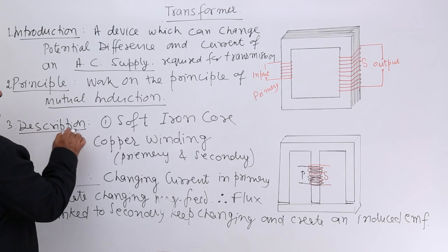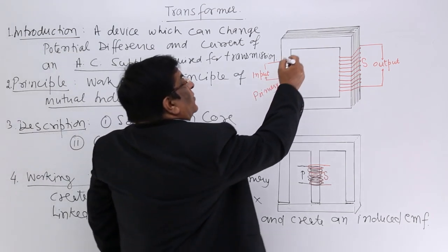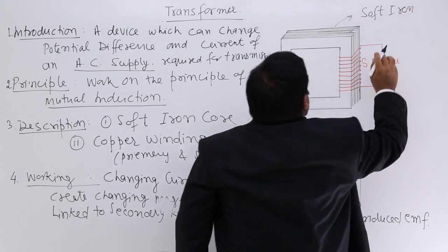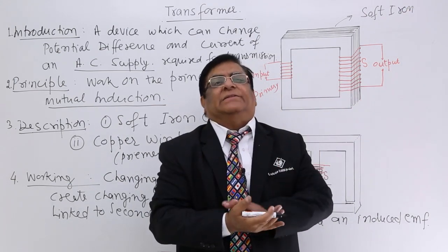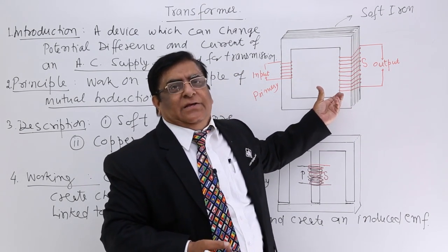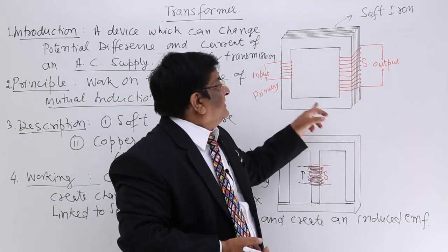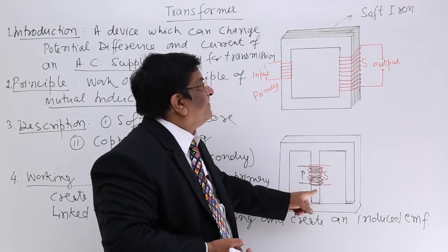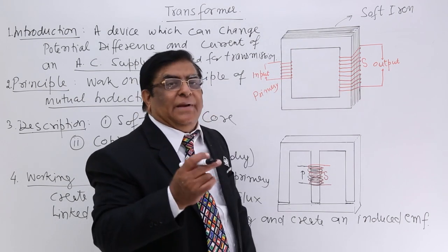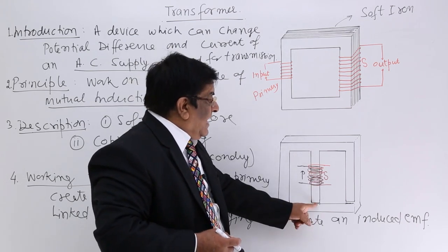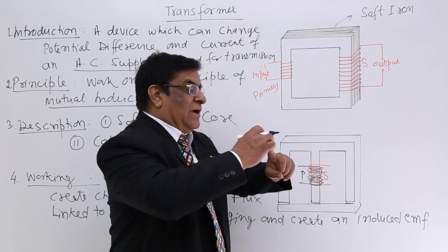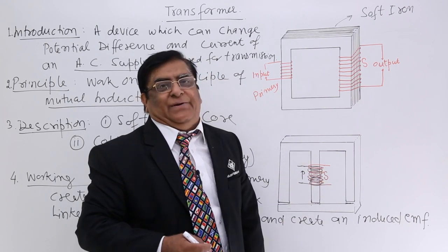Now let us look at the description and parts. One part is the soft iron core — a frame on which we make the transformer. For study purposes we can take a simple frame shape, but in practice we use an E-I type core which has a middle arm. In this practical core, we have two windings — the primary winding on one side, and the secondary winding wound over the primary.